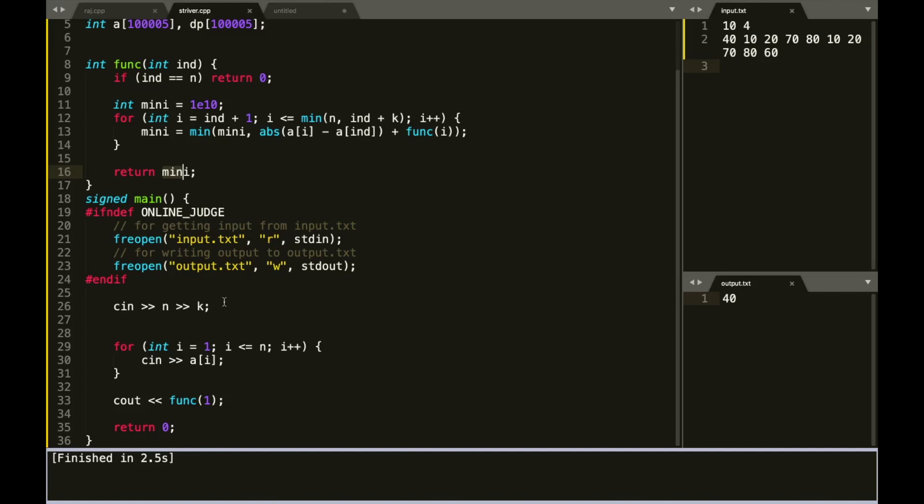Now this code will have an exponential complexity. So how will you convert this exponential complexity to something that fits the time limit? To do that, you've got to use memoization.